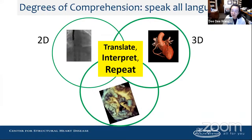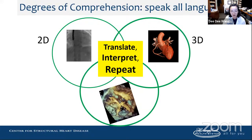The degrees of comprehension are really important and we need to speak all languages — whether you're in the cath lab, echo lab, or CT, whether you're radiology, cardiology, anesthesiology, or interventional surgery. You need to translate, interpret, and repeat using either a physical 3D print or virtual 3D model so that when guiding using whatever modality you have access to, everybody speaks the same terms and languages — and the patient has success without being in a radiation-exposed room for 6 to 8 hours.